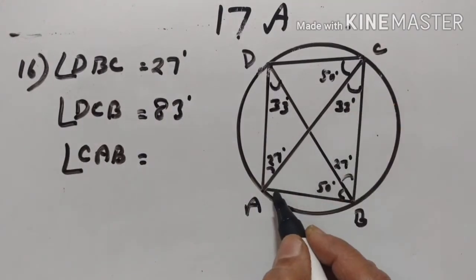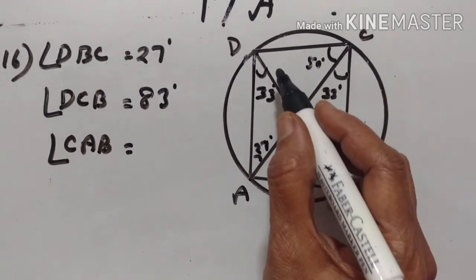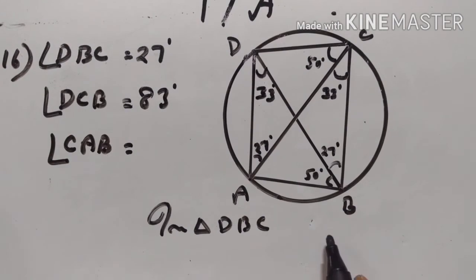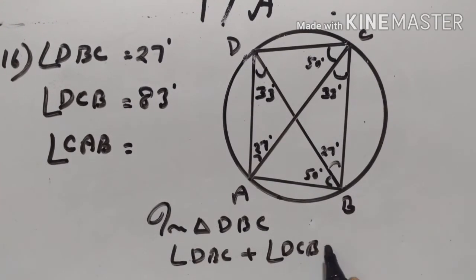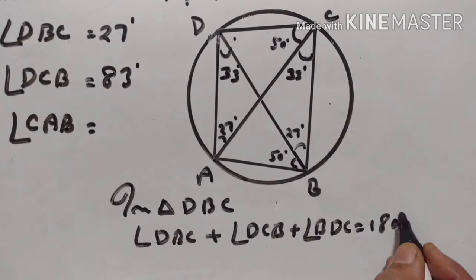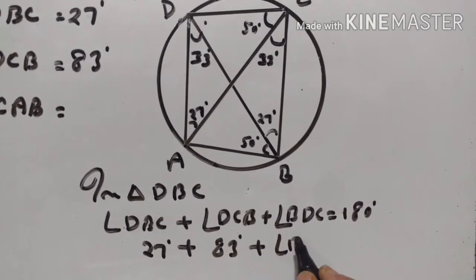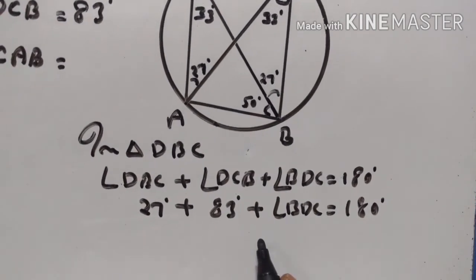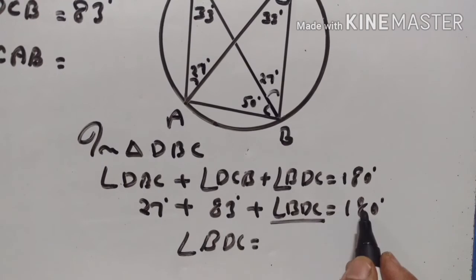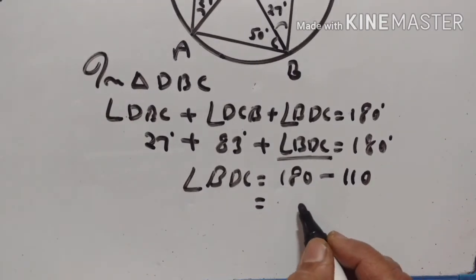Now, angle CAB. In triangle DBC, angle DBC plus angle DCB plus angle BDC is equal to 180 degrees. So angle BDC is equal to 180 minus (27 plus 83), which gives angle BDC equal to 70 degrees.